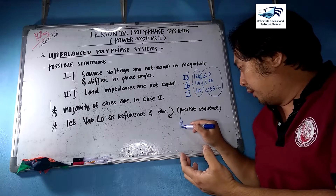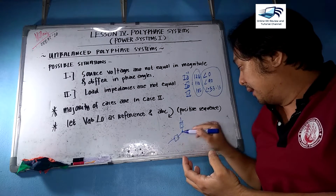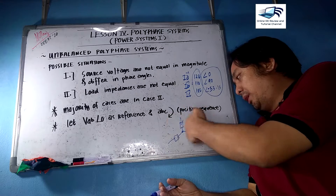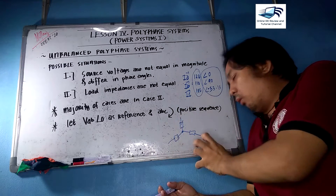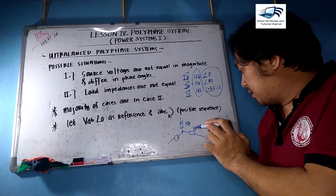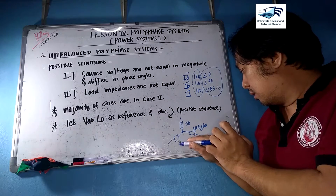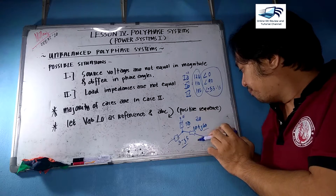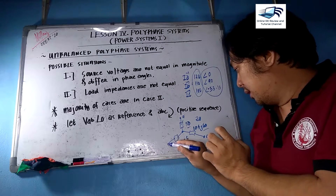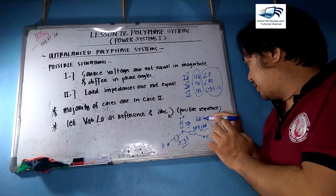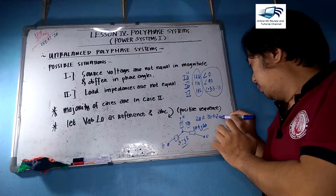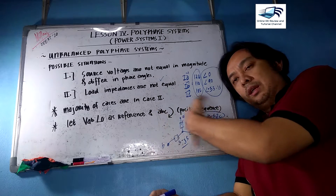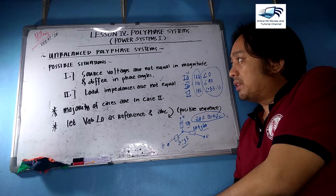For example, if you have a Y-connected load, as we discussed on balanced polyphase systems, in order for the load to be balanced you need equal impedances. But if Za is not equal to Zab and not equal to Zc, then the loads are not balanced — that is an unbalanced polyphase condition.